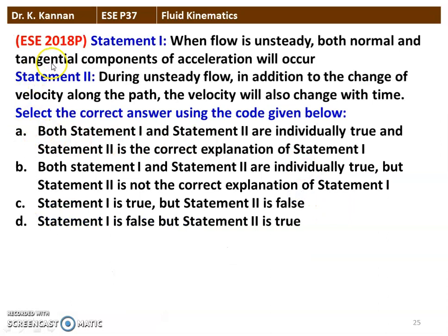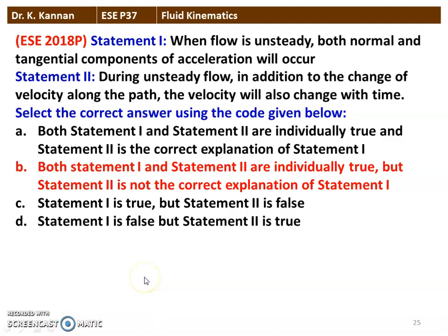The next question from the 2018 question paper has two statements. Statement 1: when the flow is unsteady, both normal and tangential components of acceleration will occur. Statement 2: during unsteady flow, in addition to the change in velocity along the path, velocity will also change with respect to time. The correct option is that both statements are individually correct, but Statement 2 is not the correct explanation of Statement 1.